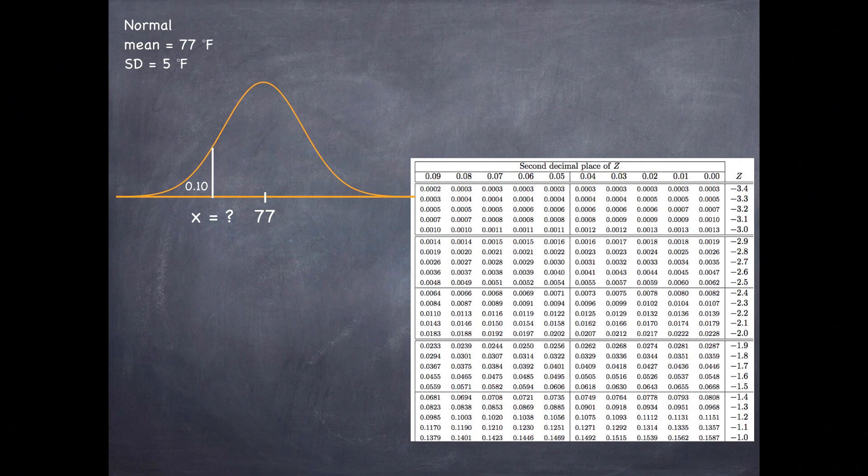It's a little tedious but it looks like at the bottom of the table the closest we can get to ten percent is 0.1003. And then if we work our way to the edges of the table we're going to see that the z-score associated with the tenth percentile of a distribution is negative 1.28.